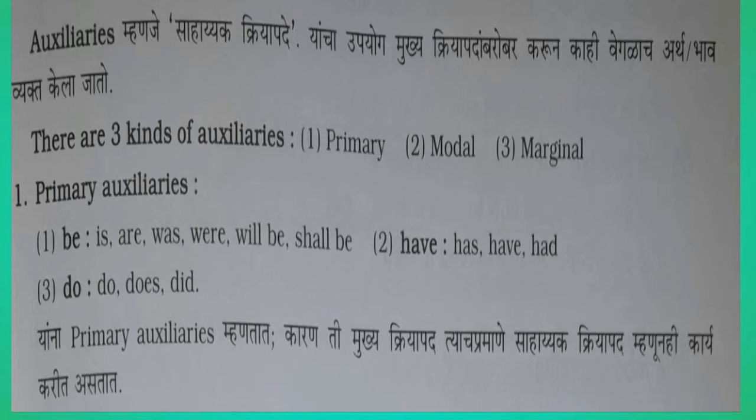Let's see. One: Primary Auxiliaries. First, To Be — examples: Am, Is, Are, Was, Were, Will Be, Shall Be. Two: Have — these are Have, Has, Had. And three: To Do — and these are Do, Does, Did.